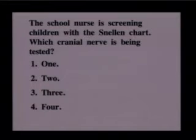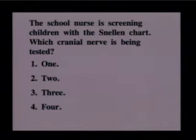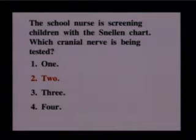The first section we're going to talk about is assessment tests. The school nurse is screening children with a Snellen chart. Which cranial nerve is being tested? The answer is number two. The Snellen chart tests for vision — in adults it has letters, in children there may be animal pictures. Cranial nerve number two is the optic nerve, and that deals with vision.